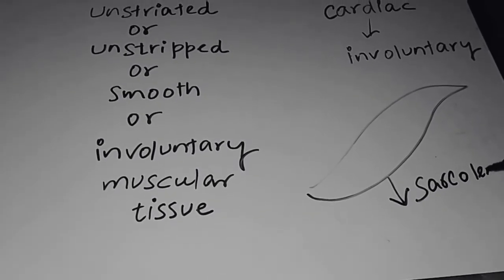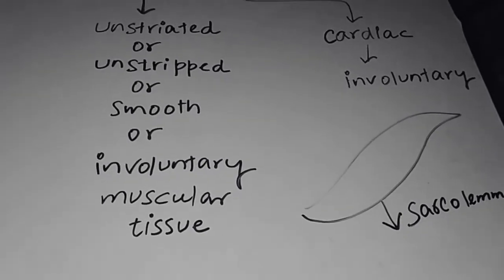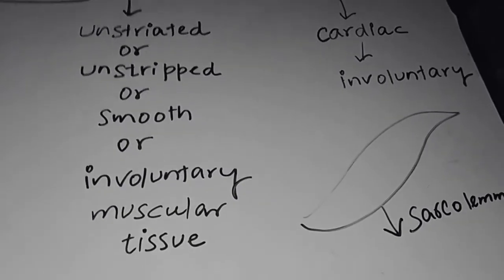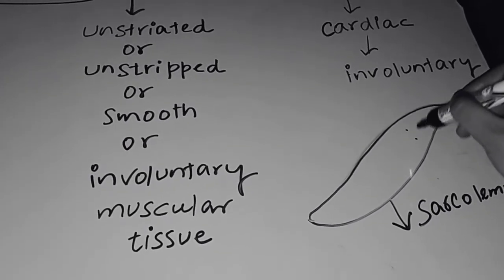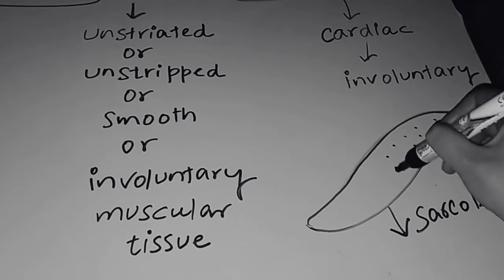Sarcolemma. What is sarcolemma? Sarcolemma is nothing, it is just the cell membrane of muscle cell. So inside the muscle cell, like any cell, there is cytoplasm.